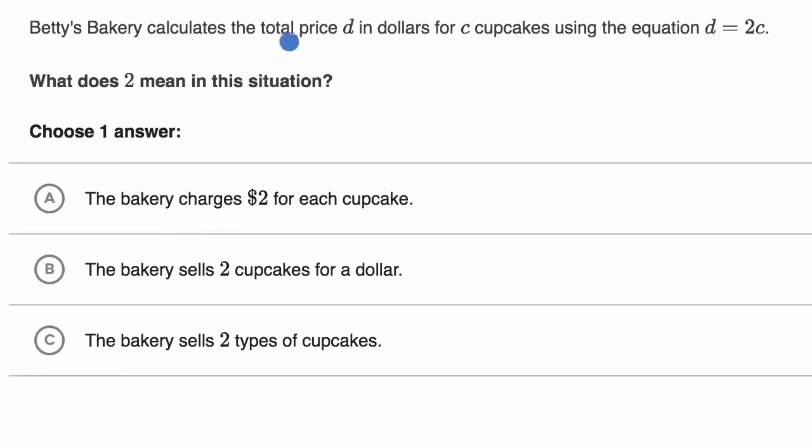Betty's Bakery calculates the total price d in dollars for c cupcakes using the equation d equals two times c. What does two mean in this situation?